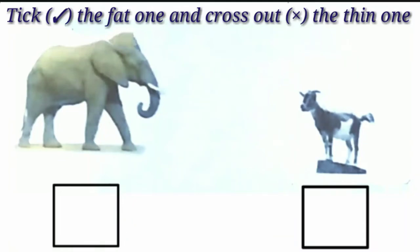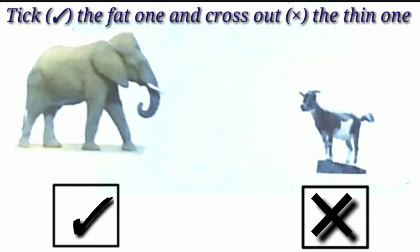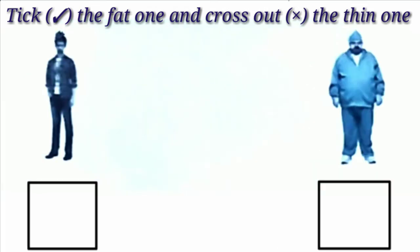Hello kids, today we will learn: take the fat one and cross out the thin one. Here are two pictures: elephant and goat. Elephant is the fat one and goat is the thin one. So we will take the fat elephant and cross out the thin goat. Here are two pictures: boy and man.